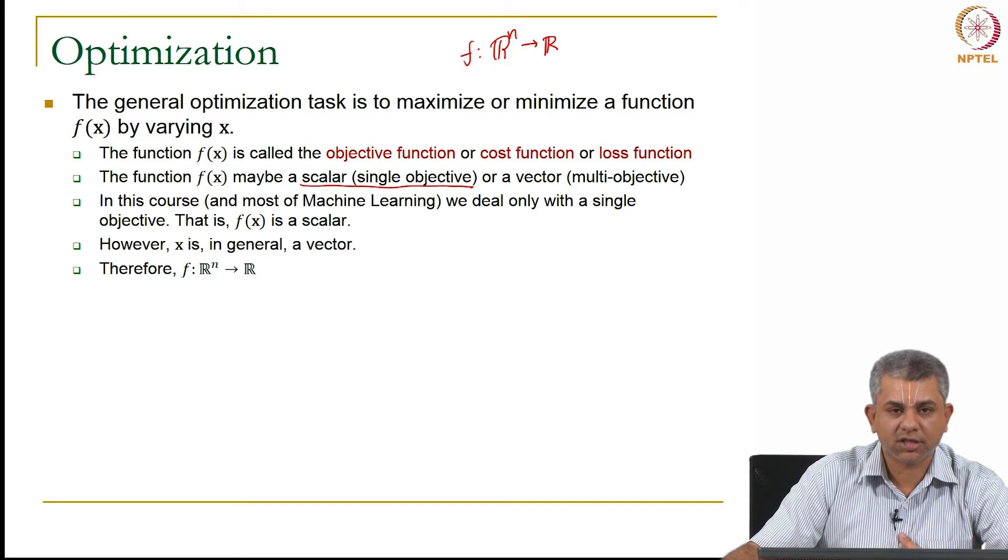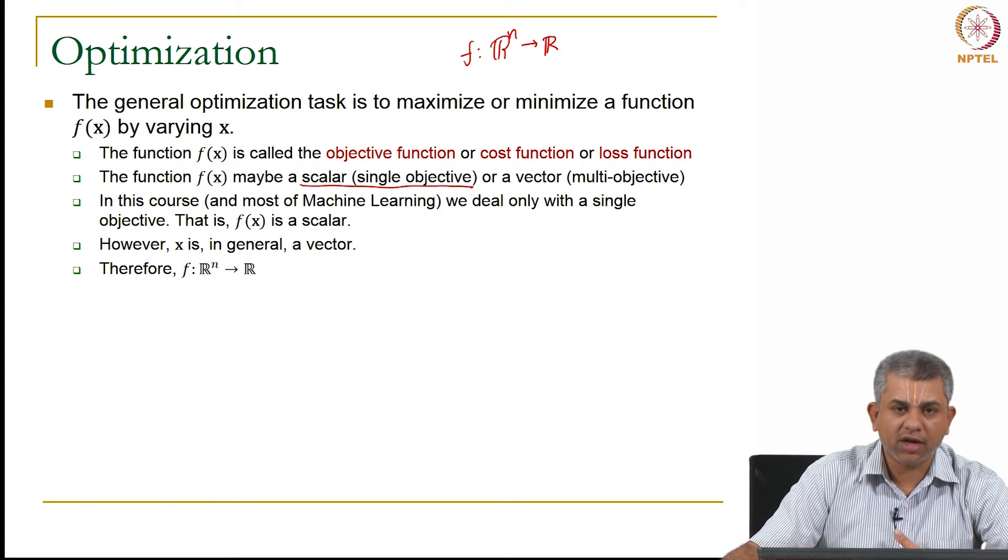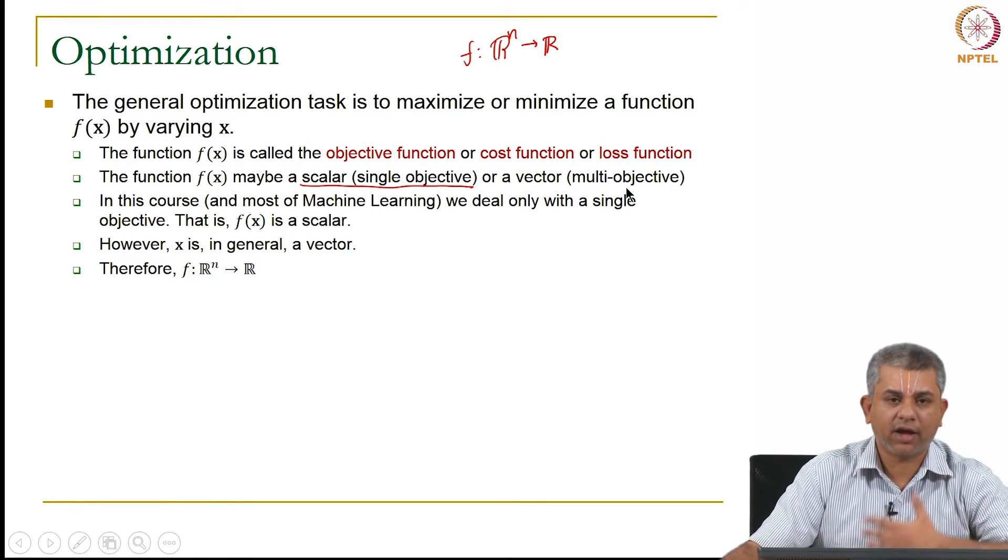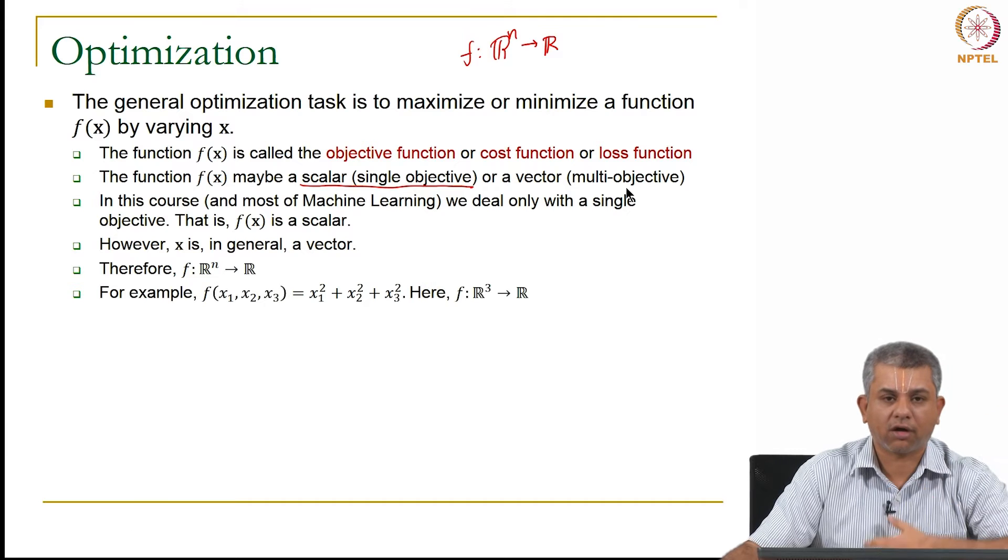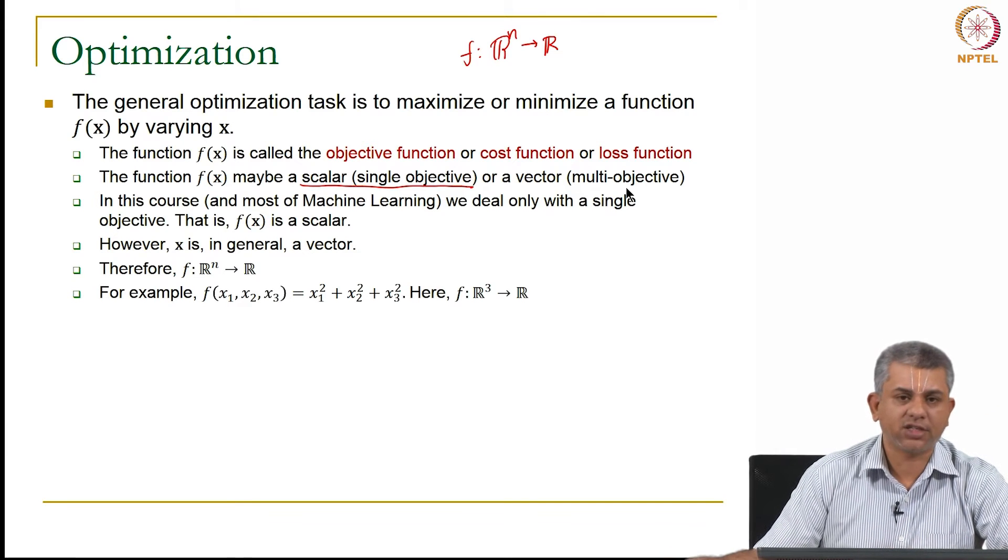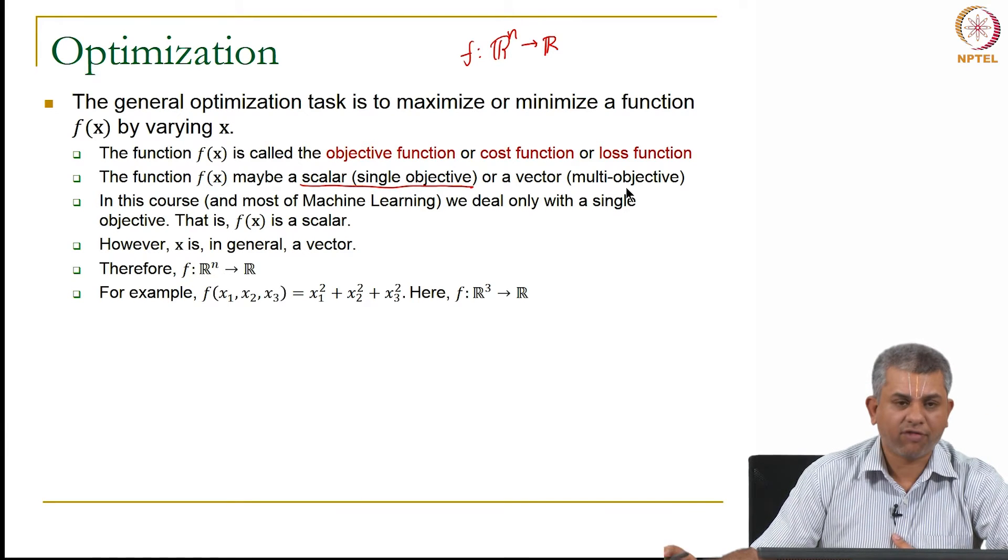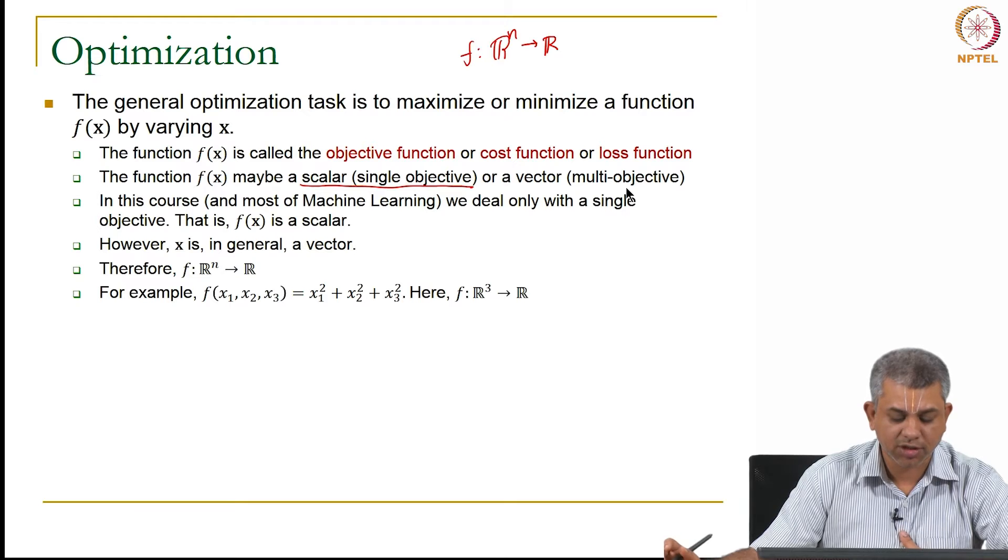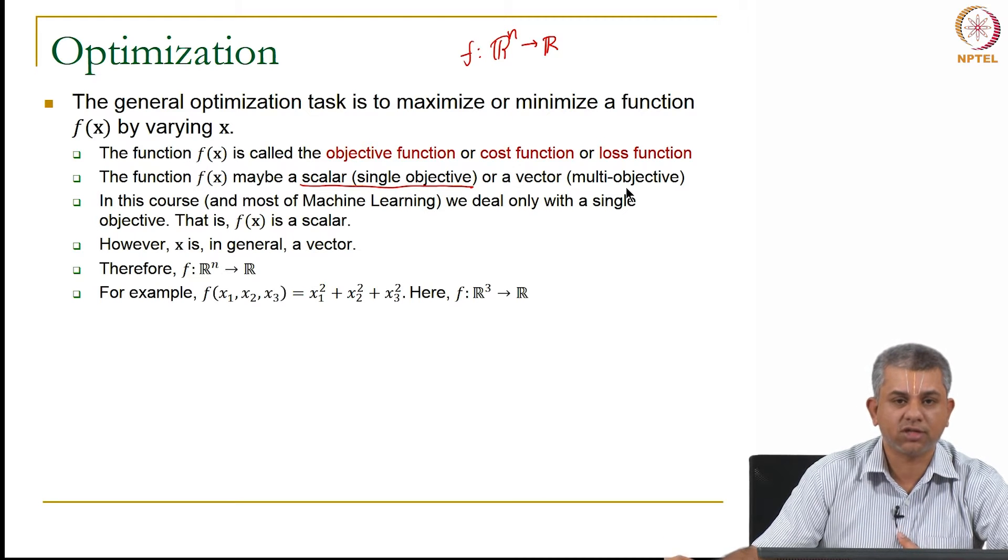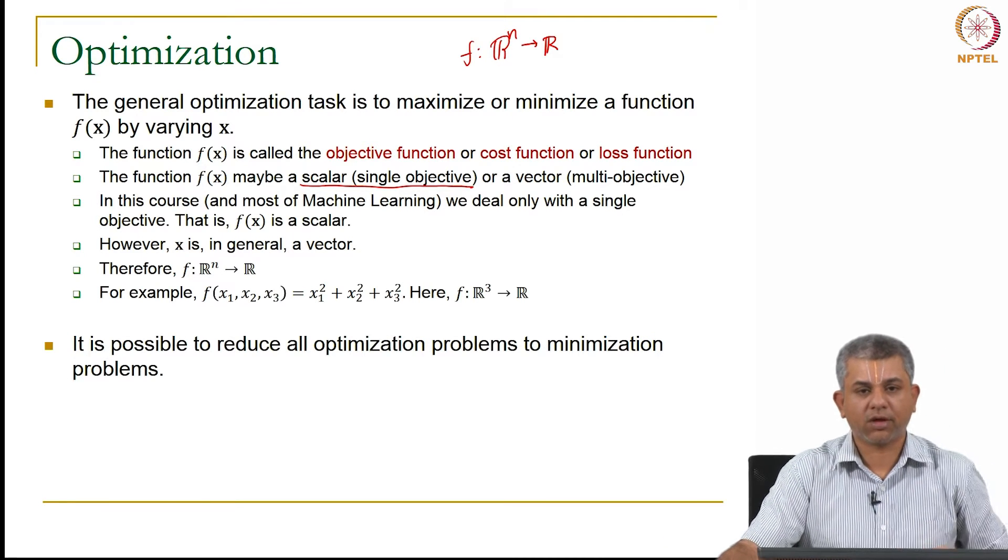X in general, remember, is a vector and typically we are going to deal with the case where f goes from R^n to R. So an example of such an f could be f of x vector which is three-dimensional: x1 squared plus x2 squared plus x3 squared. Here f is going from R^3 to R.